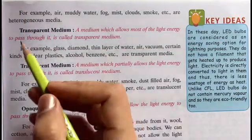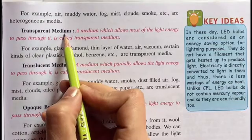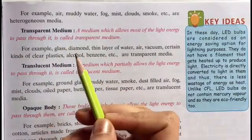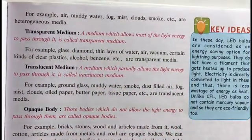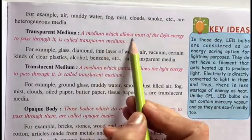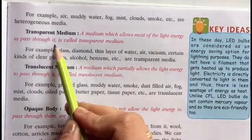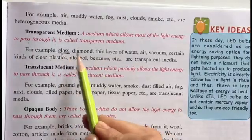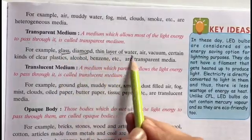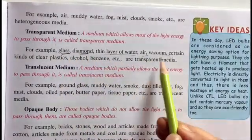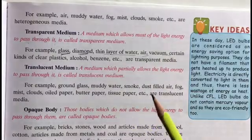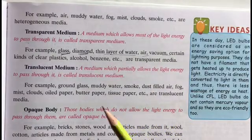After optical medium, we will discuss transparent medium. Transparent medium is one that allows all the light to pass through itself. The medium which allows most of the light energy to pass through them. For example, glass, diamond, thin layer of water, air, vacuum - in all of these, light can easily cross through them.